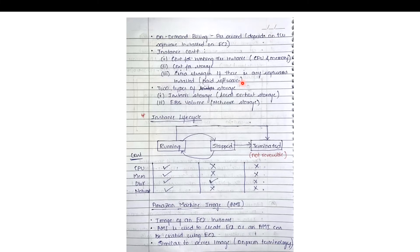You stop paying for storage only when you terminate the instance. When you stop an EC2 instance, the EBS volume attached to it is still available and has not been deleted, so you are still billed for it. To pay zero amount for EC2, you must terminate the instance, not just stop it. There are two types of storage associated with EC2: instance store (local host storage) and Elastic Block Storage (EBS), which is network storage.